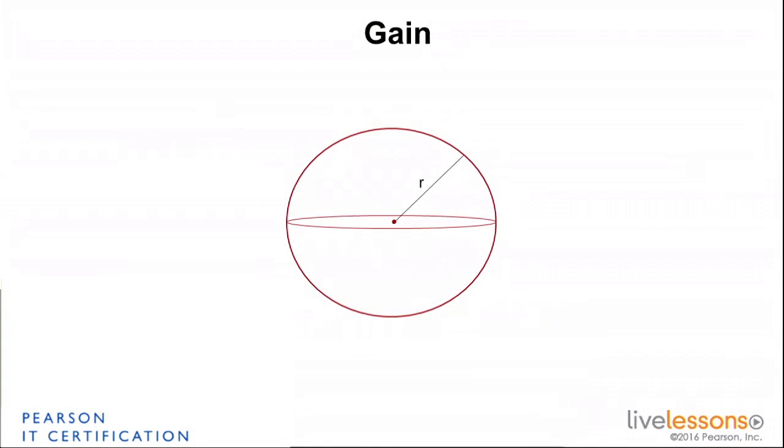The gain of the antenna is something you have to understand clearly. Imagine a sphere, my isotropic antenna. It's going to radiate energy in all directions. It's going to be the same amount in all directions. The only thing that's going to vary is the distance.